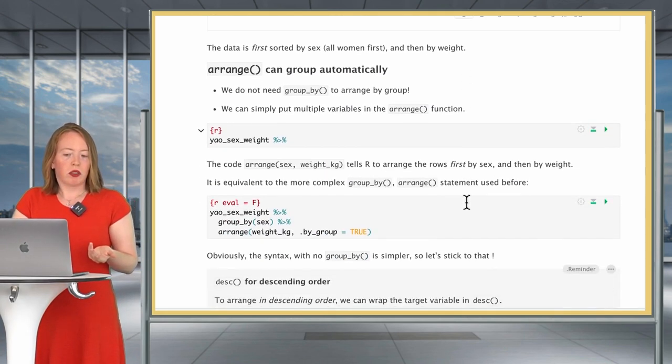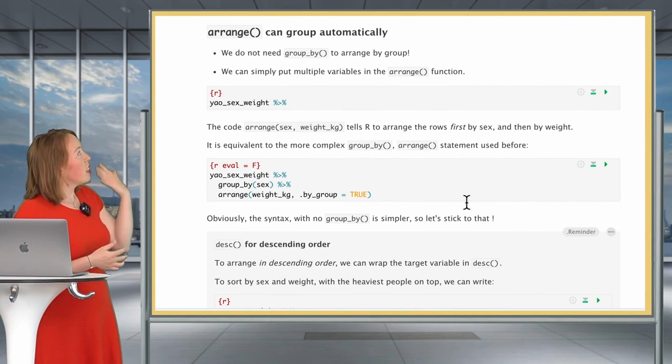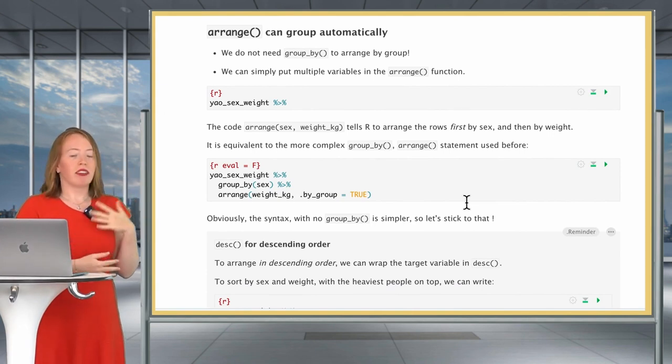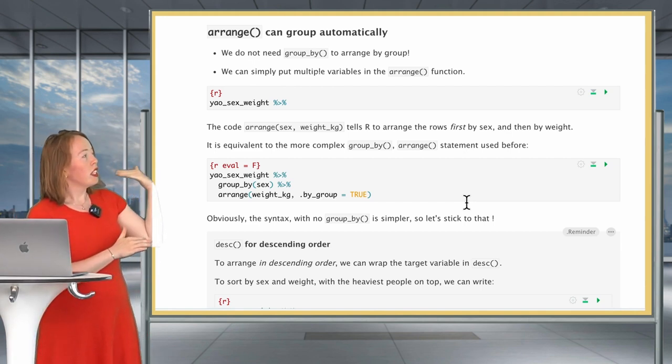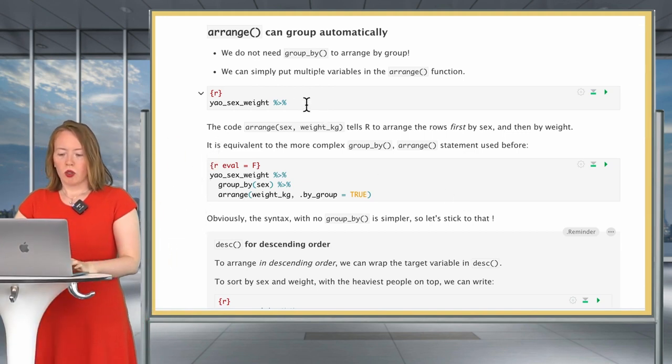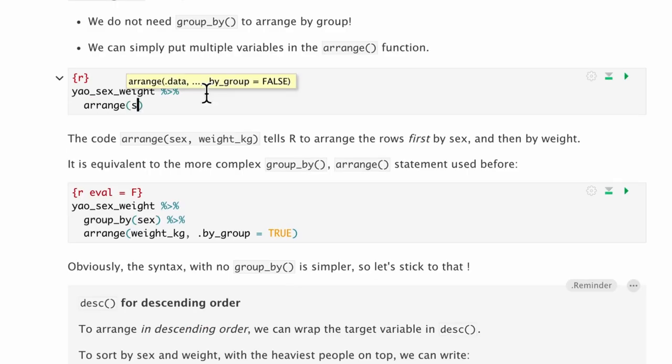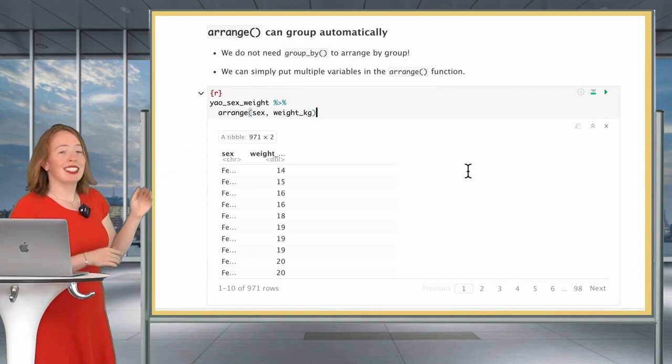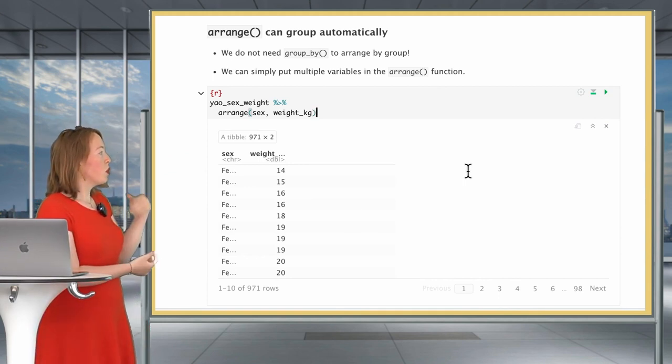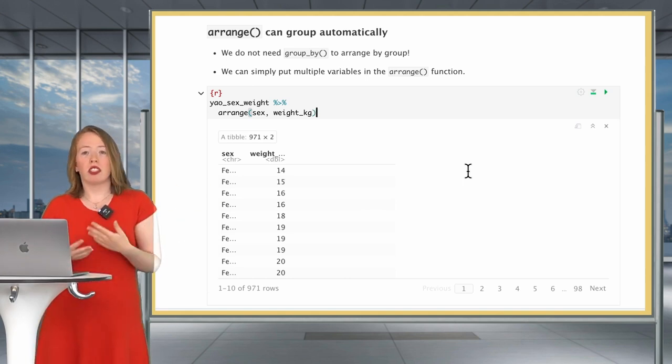And the reason for this is that if we want the grouping to affect our arrangements, we have to set the by_group argument to true. So let's repeat the same thing. We're going to group by sex. Then we're going to arrange by weight in kilogram. But this time, we're going to set our by_group argument equal to true. Let's look at what we get, which is going to be different. So now we have all females ordered from lightest to heaviest, then all males ordered from lightest to heaviest. The grouping has affected the arrangement.